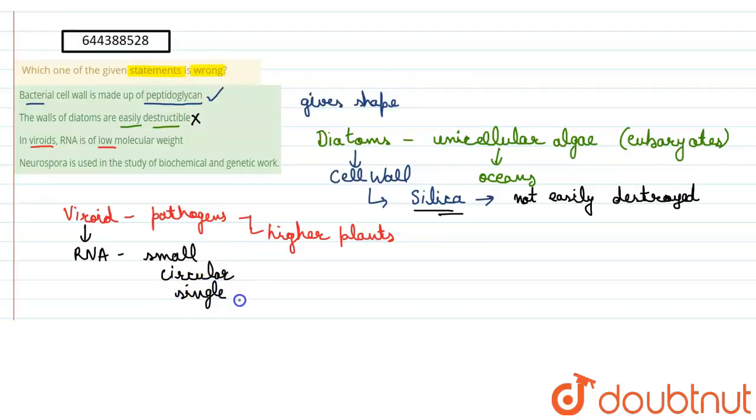And therefore, it is of low molecular weight. So this statement is right. That the viroids, the RNA is of low molecular weight. This is a correct statement.